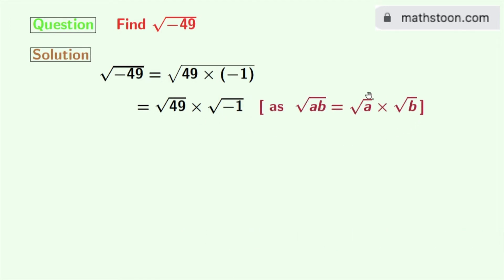As we all know that square root of ab is equal to square root of a times square root of b. Here a is 49 and b is minus 1.